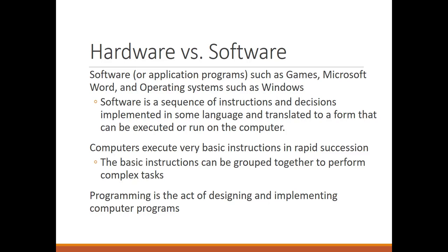We also have something called software, which handles the computer's operations. Like any program — games, Microsoft Word, or operating systems like Windows or Macintosh — all of them are called software. Basically, software is a sequence of instructions that tells the computer to do specific tasks. These tasks handle the hardware, and you can see the sequence of results on your monitor. Every instruction is run and executed by the computer and then you can see the result on screen.